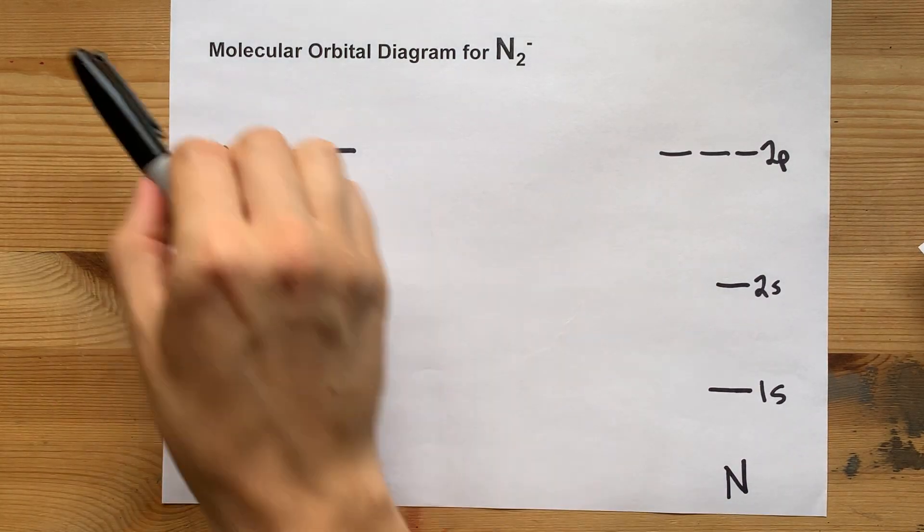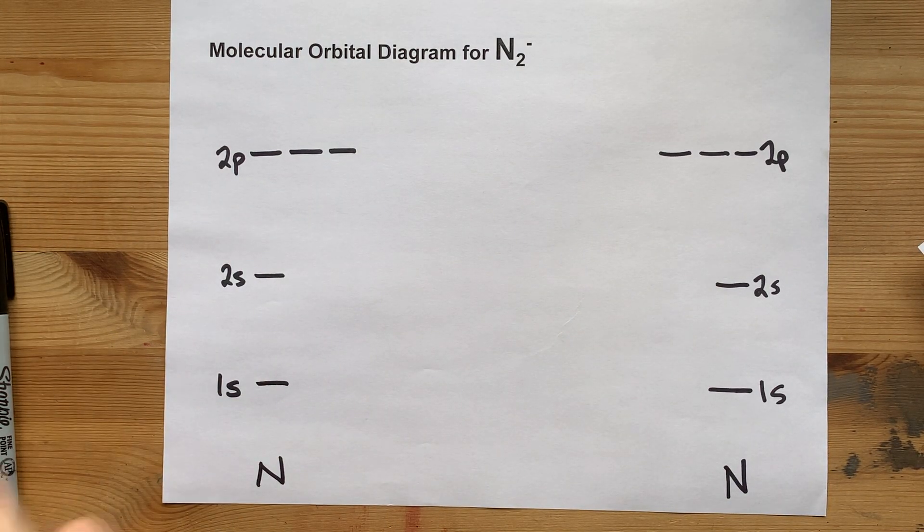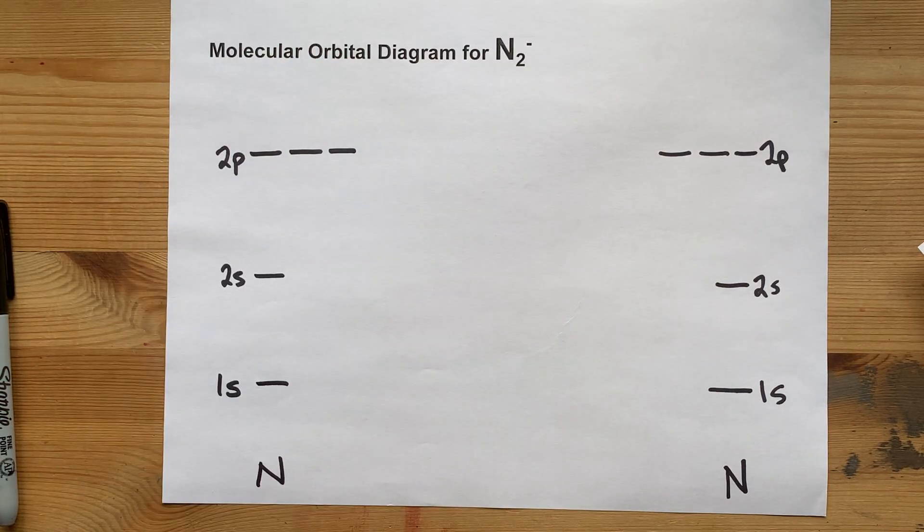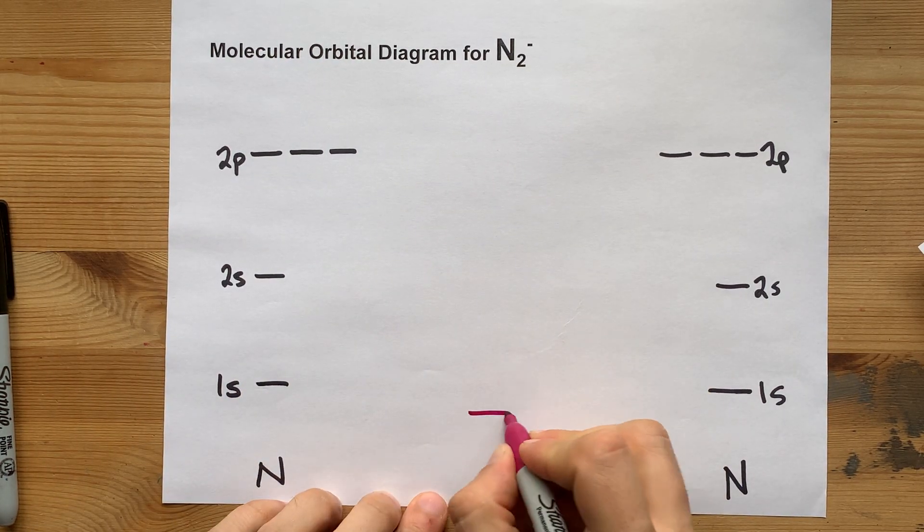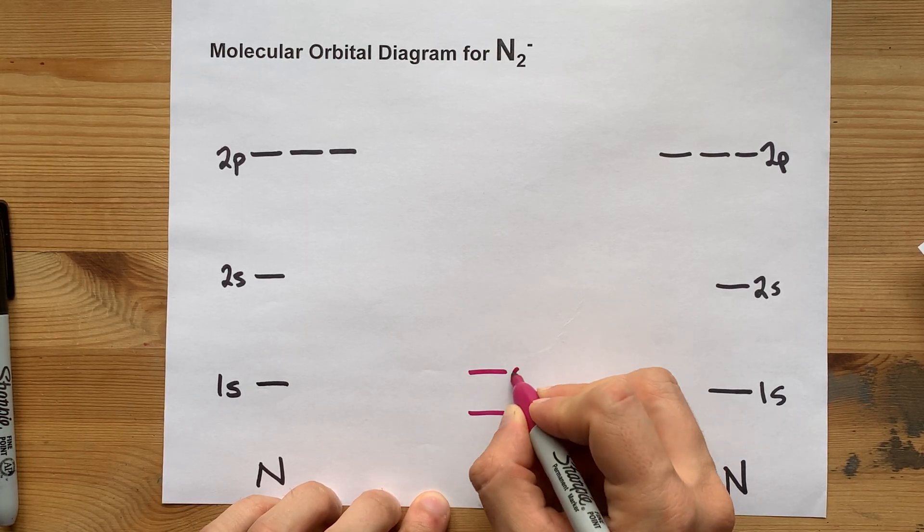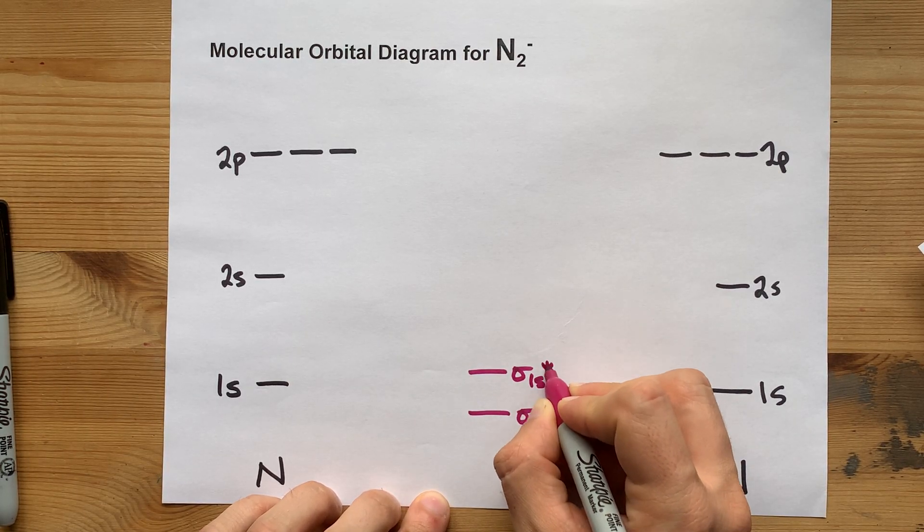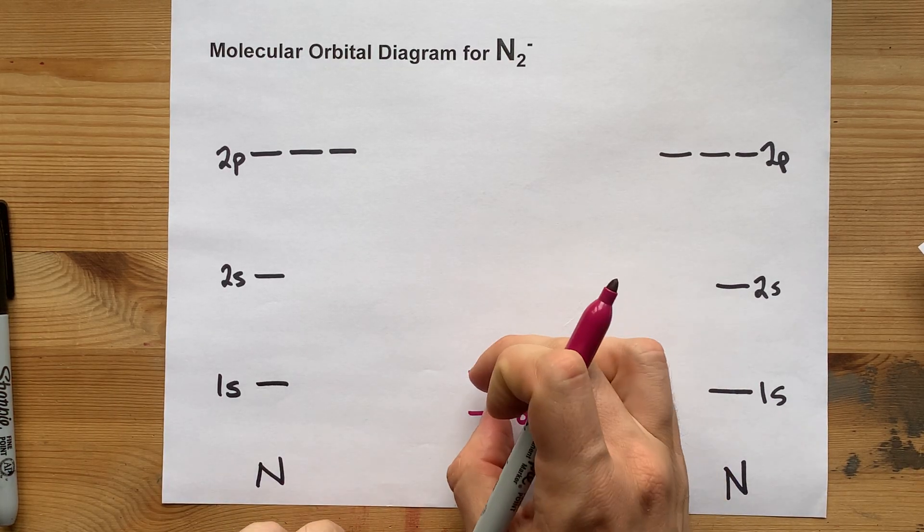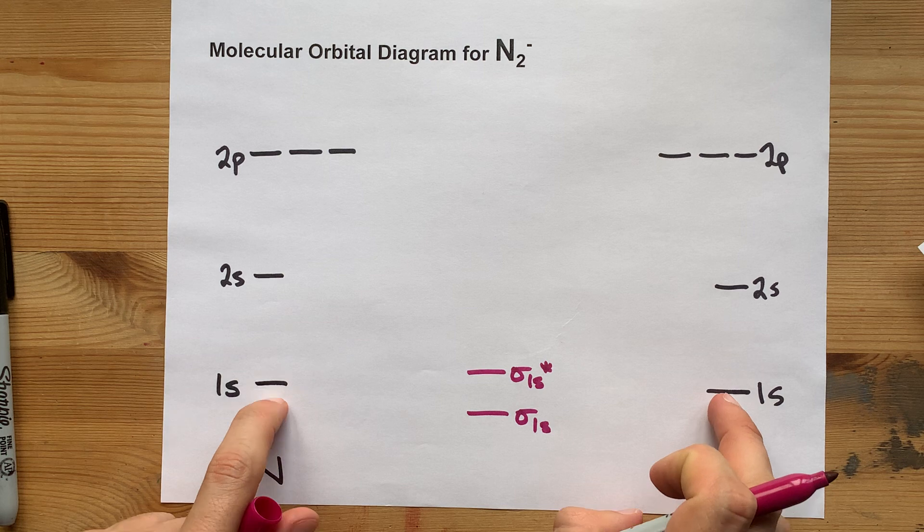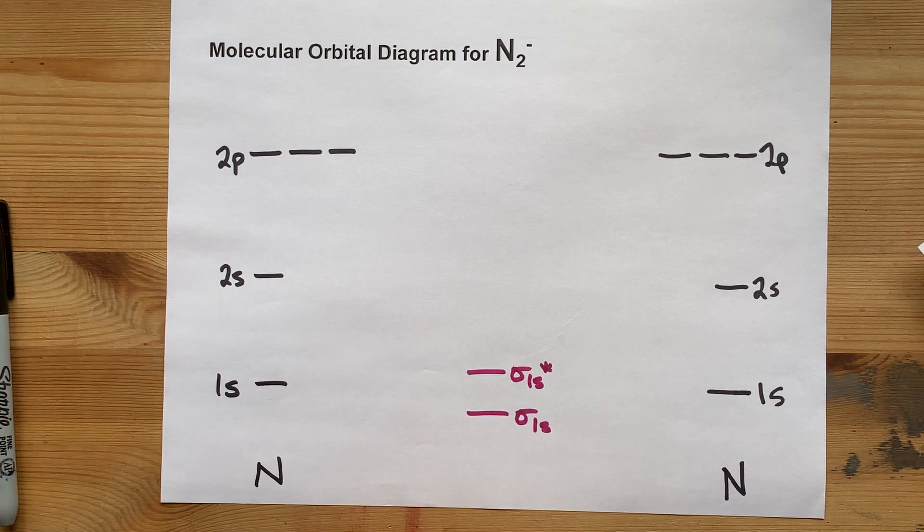What I've done in black is just the atomic orbitals. Now for the molecular orbitals: 1s orbitals overlap to make sigma 1s and sigma 1s antibonding. These two lines should have the same average height as these two, because you're not creating or destroying any energy. The 2s orbitals will overlap to make sigma 2s and sigma 2s antibonding.